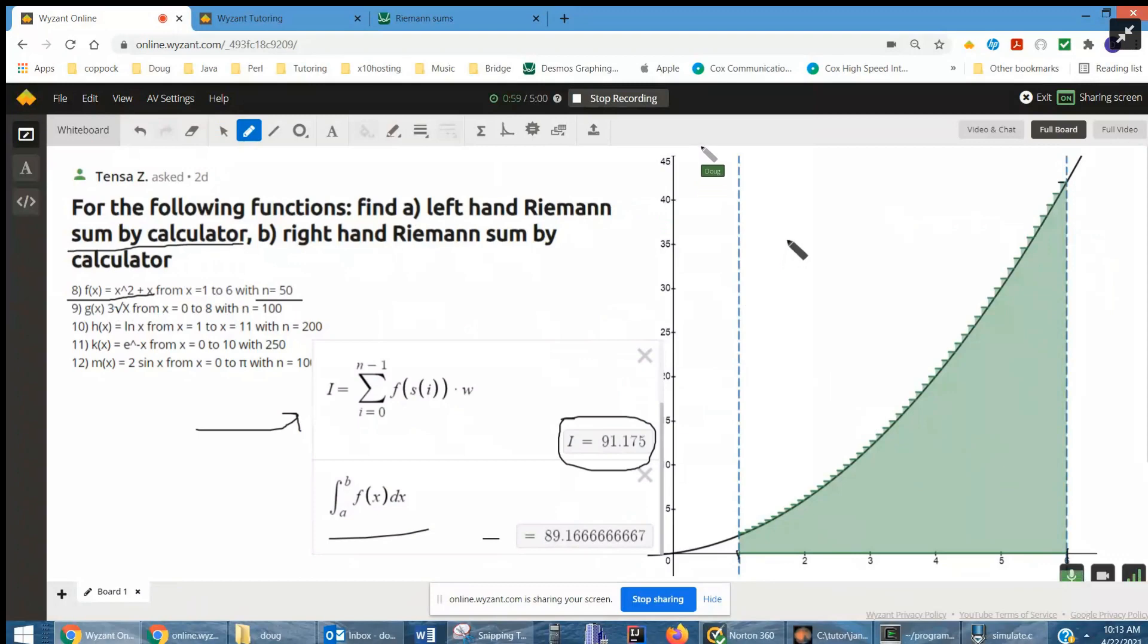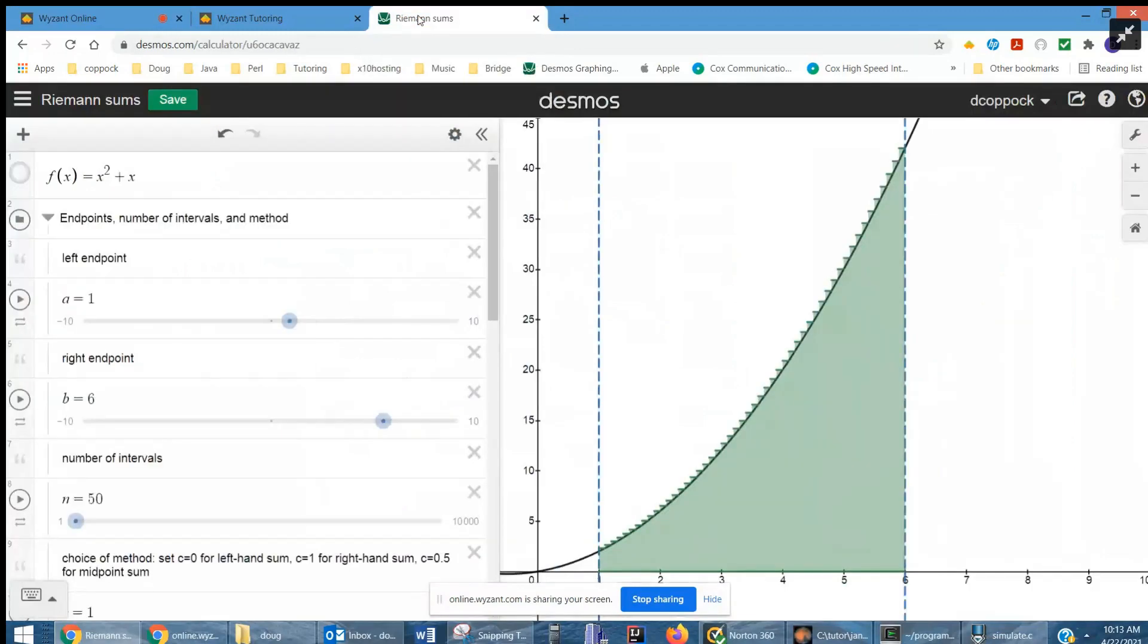Question is, how do we use Desmos to actually set this up? And I'll go to Desmos, and then eventually I'll replace this x squared plus x with 3 radical x. Okay, so here we can go to Desmos. Here's the f of x function, x squared plus x.